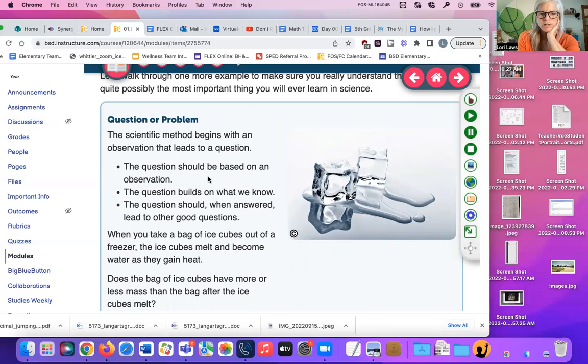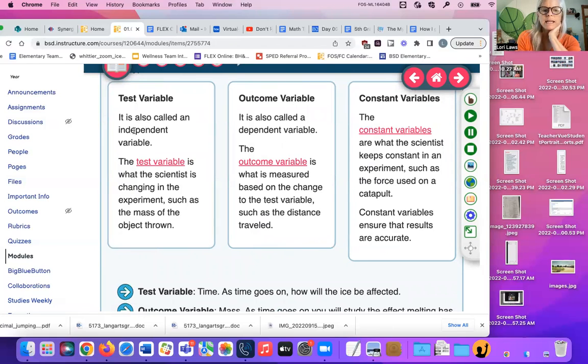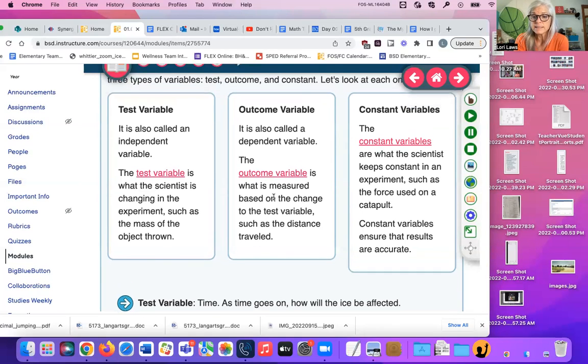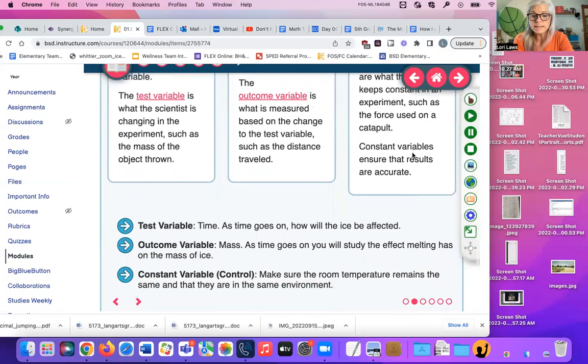It begins with an observation that leads to a question. When you take a bag of ice cubes out of the freezer, the ice cubes melt and become water as they gain heat. Does the bag of ice cubes have more or less mass? Test variable, also called an independent variable, is the thing that changes in the experiment. And there has to be just one thing changing. The outcome variable is what is measured. So in this case, you're testing the ice being out in the heat. The constant variables are like how much ice you use, when you take it out, how long you leave it out. That has to stay the same.